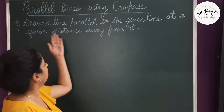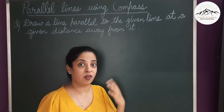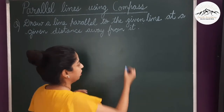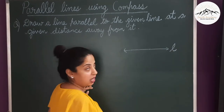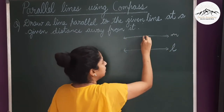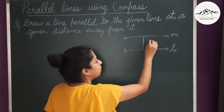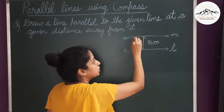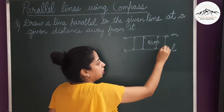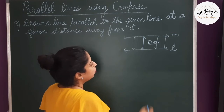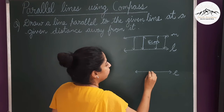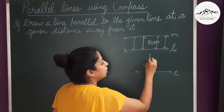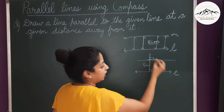Now we will draw a line parallel to the given line at a particular distance away from it. In the earlier questions we just took a point P outside the line but didn't know the exact distance between the two parallel lines. Suppose there is a line L and I have to draw a line M such that it is five centimeters away from it. The distance between the two lines should be exactly the same everywhere for it to be a parallel line. We will make a 90-degree angle at a point on L, cut an arc at the required distance, and draw another 90-degree line there.